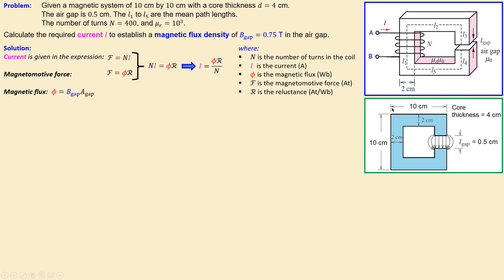Looking at the 2D diagram: the system is 10 cm by 10 cm, with a 2 cm dimension shown. The gap is 0.5 cm and the core thickness is 4 cm. We also need to consider fringing, which gives a more accurate result. To account for fringing, we add the gap length to each dimension: 0.02 meters plus L_gap for width.